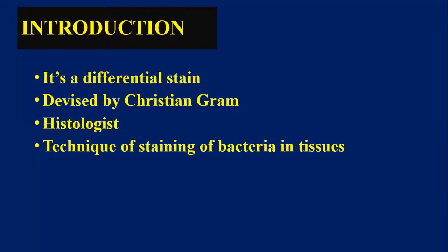Gram staining is a differential stain, meaning it gives the difference between gram positive and gram negative cell walls. It was devised by the scientist Christian Gram, who was a histologist. It is used for the staining of bacteria in tissues.